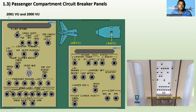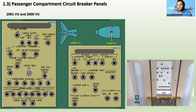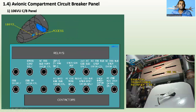For the passenger compartment circuit breaker panels, there are two panels: 2001VU and 2000VU. The 2001VU is aft and the 2000VU is in the front cabin. The 2000VU includes flush motors for the toilets, cabin compartment, air conditioning compartment outlets, and forward lavatory. The 2001VU includes the vacuum toilet system, left-hand aft, lavatory aft hot water, and occupied indicators.